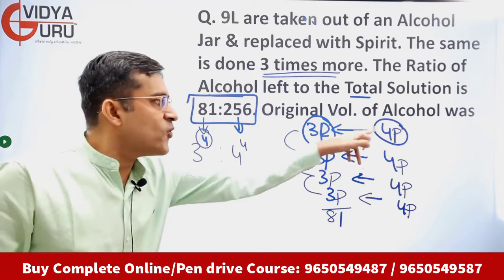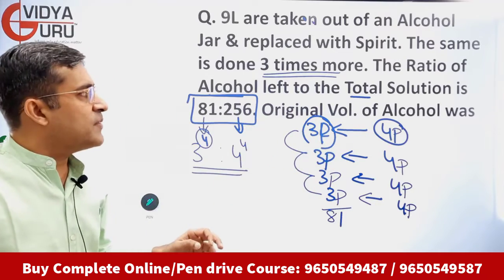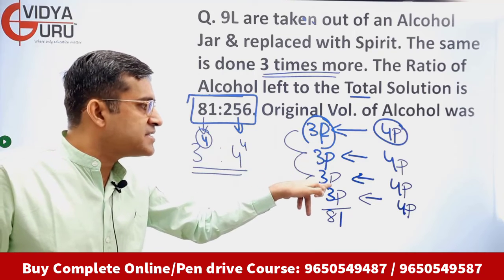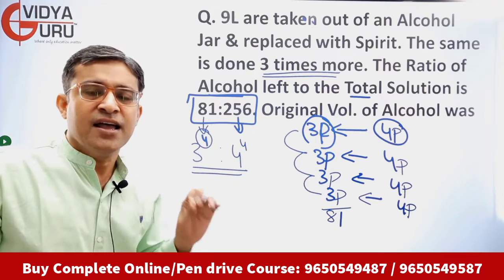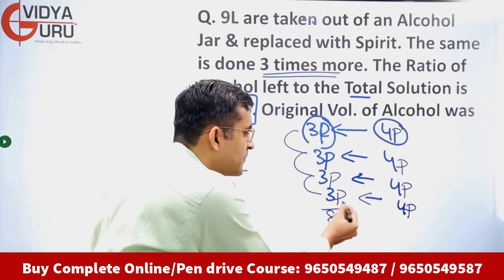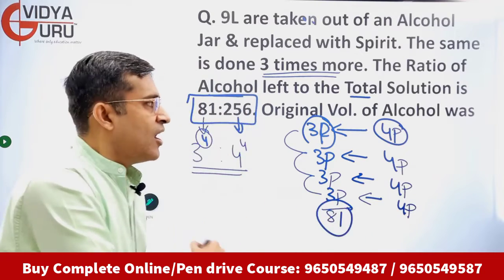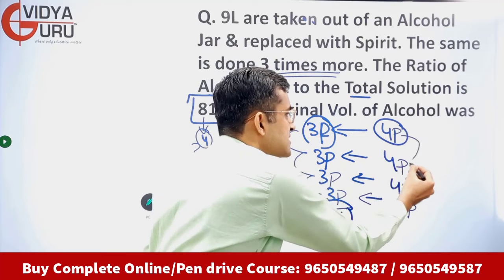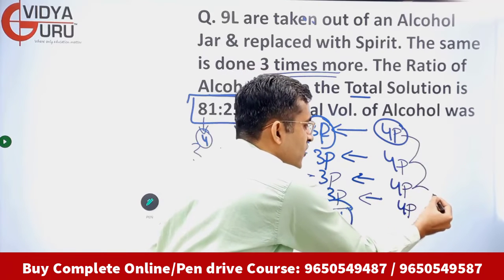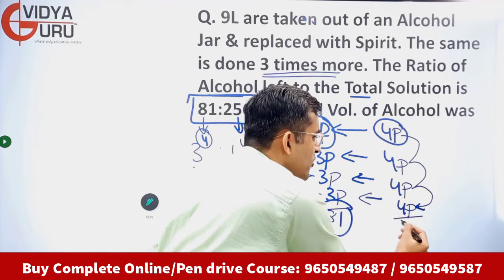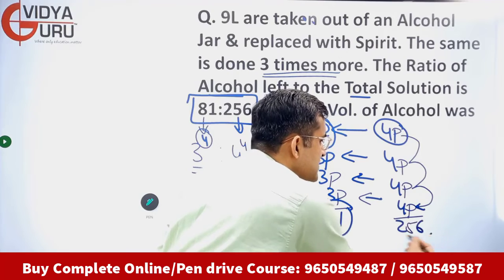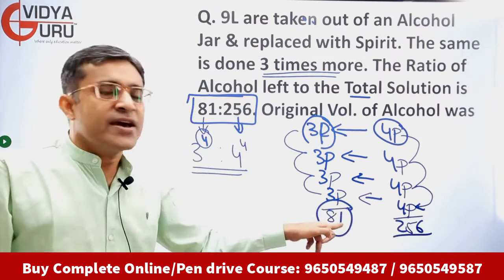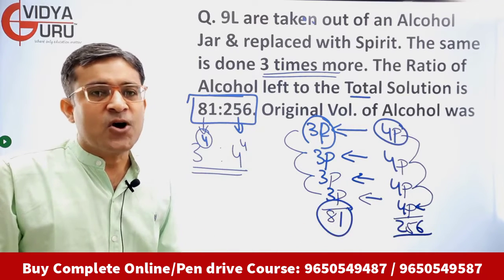Every time we take out 9 liters of alcohol and replace it with spirit, we convert 4 parts into 3 parts. This operation is performed 4 times. So alcohol left is 3×3×3×3 = 81 parts, and we started with 4×4×4×4 = 256 parts.